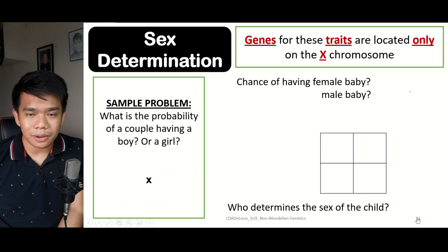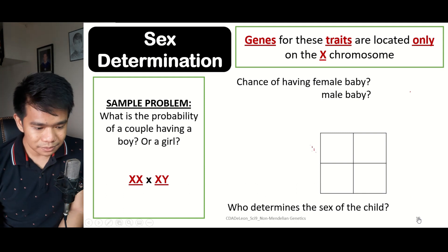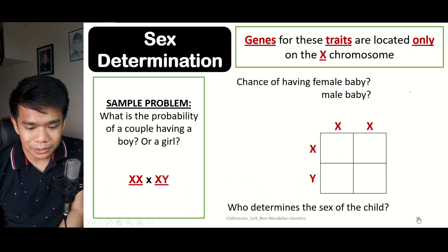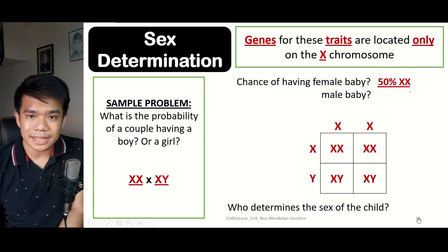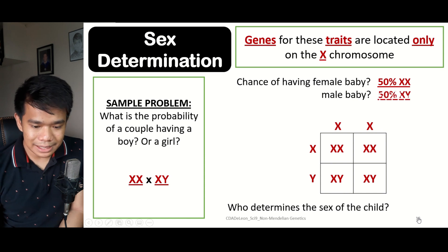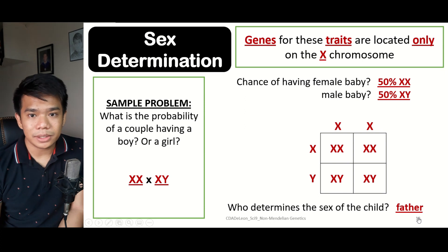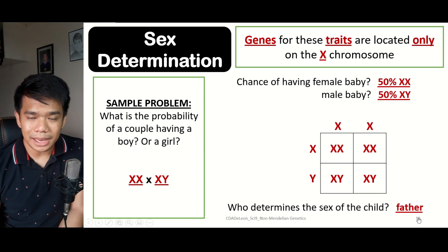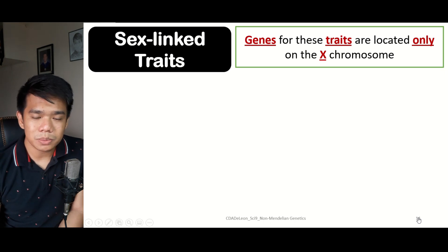What is the probability of having a male or female offspring? Looking at the Punnett square — a cross between XX and XY — we get two XX offspring at 50% and two XY offspring at 50%. Remember, it is always the father who determines the sex of the child, because the male contributes the Y chromosome. If there is a Y chromosome, the offspring is male; if not, it is female.